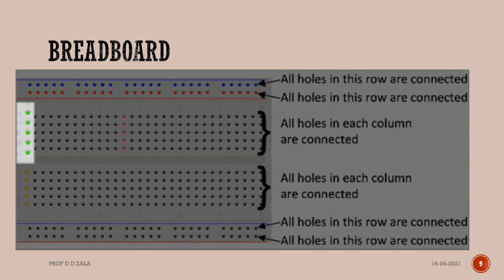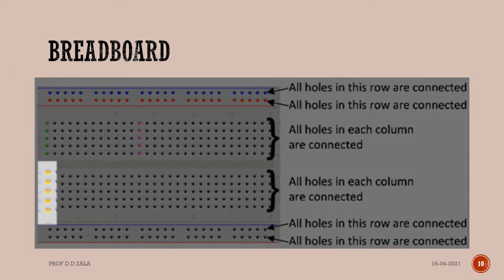In the middle, the columns of holes are connected together. For example, all the green holes marked are connected together, but they are not connected to the yellow holes.